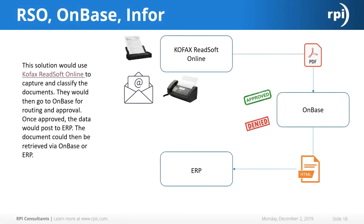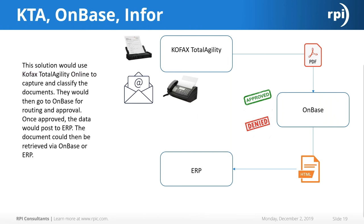So that was COFAX ReadSoft Online, OnBase, and Infor — all three applications working together to automate invoices. Our last solution is COFAX Total Agility, which does pretty much the same thing as COFAX RSO. It captures and classifies documents, sends them to OnBase for routing and approval, and once approved it sends the data to your ERP system. You can then access the OnBase document through your ERP system or through OnBase.